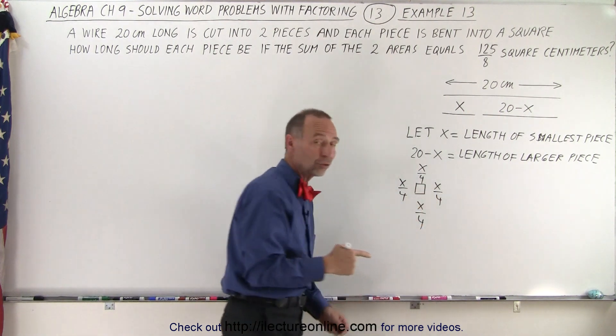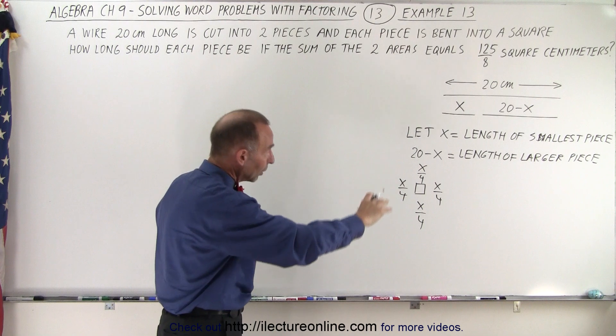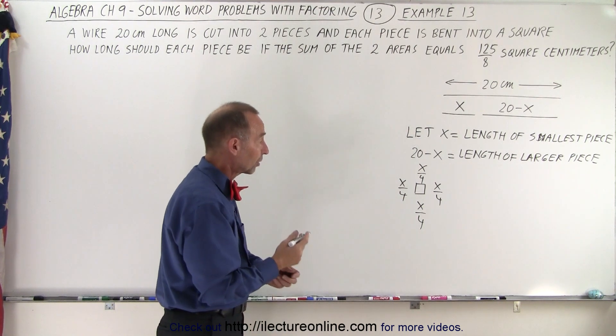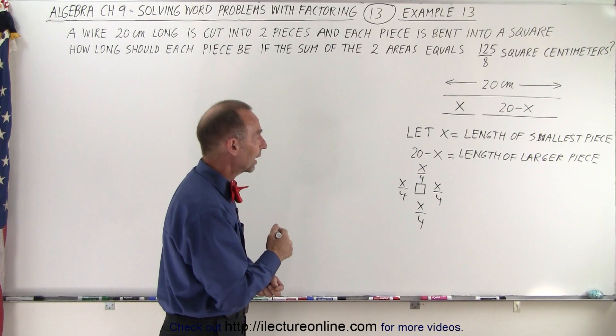That would be the four sides of the square. Add them all together, that gives you a total circumference of x when you add them all together.